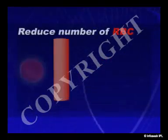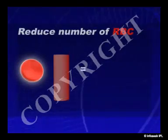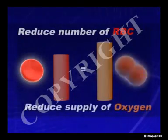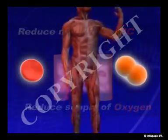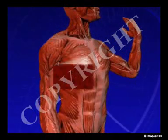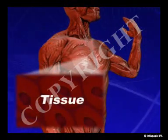A reduced number of red blood cells leads to decreased supply of oxygen to the tissues, affecting their function. This is what happens in anemia.